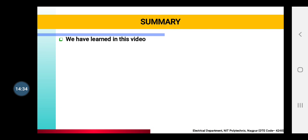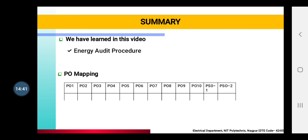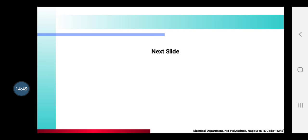Summary: In this video, you have learned about the energy audit procedure, and it is mapped to PO1, PO2, PO3, PO10, and PSO1. The next video will be on the energy audit report format.